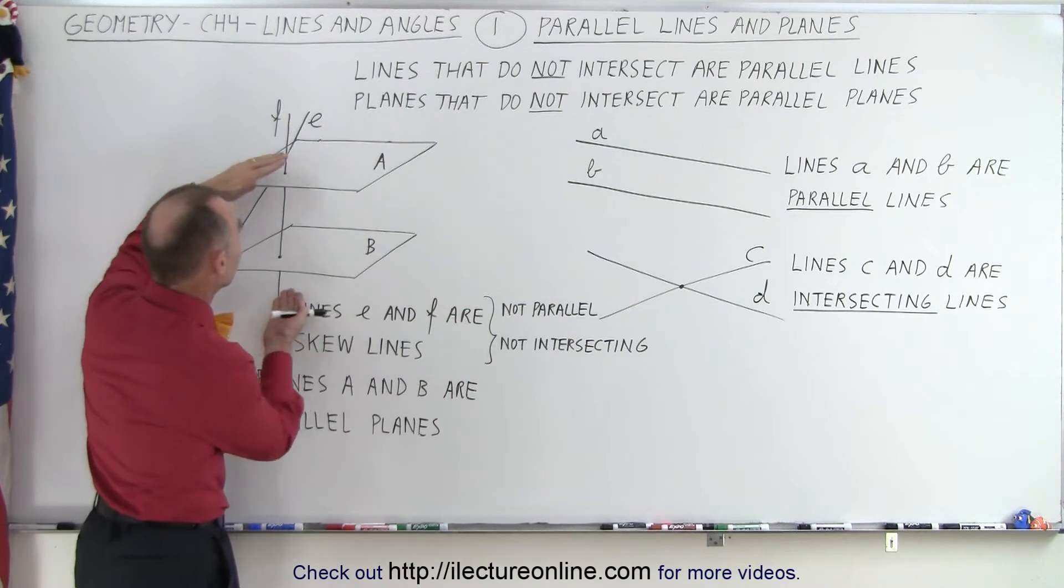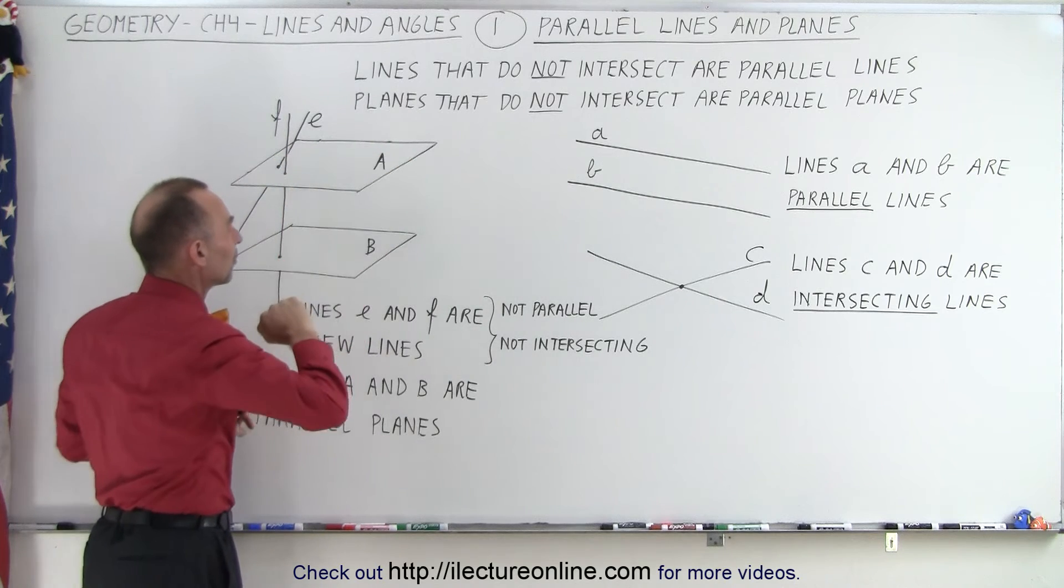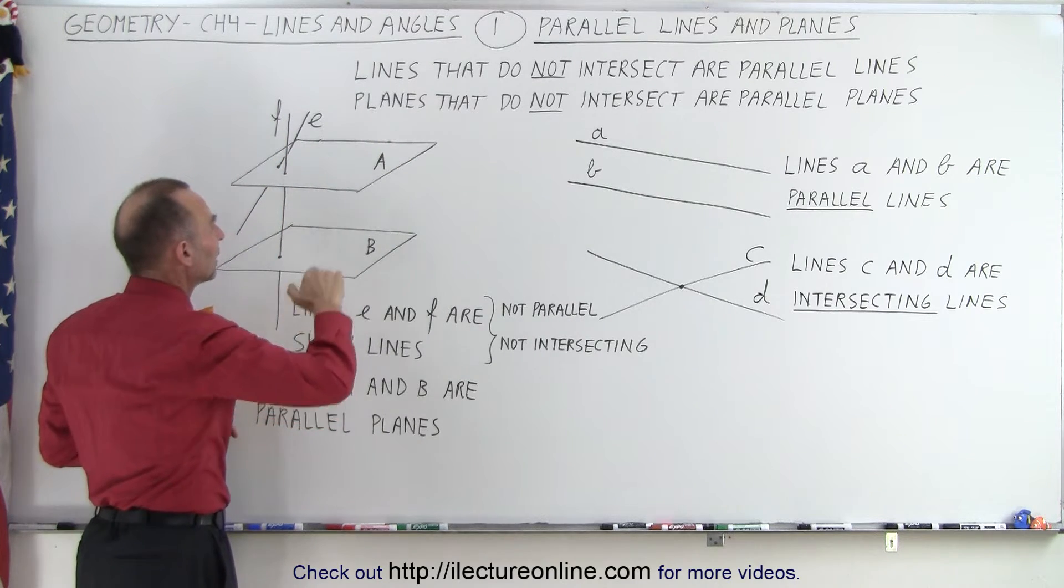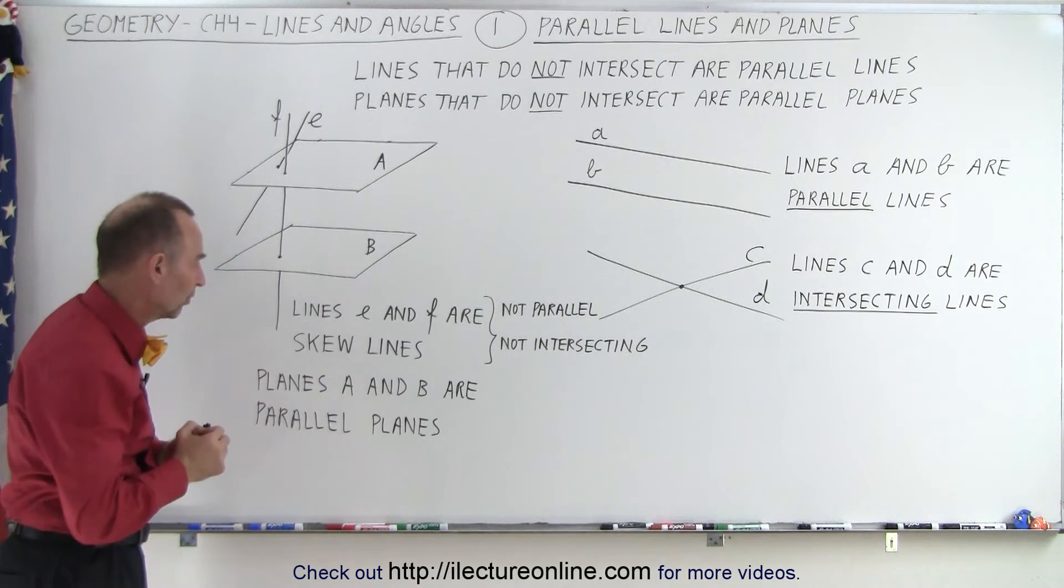Here's an example of two parallel planes. Notice that the distance between the planes is constant everywhere. And we can see that A and B are parallel because they do not intersect. That's usually the good litmus test.